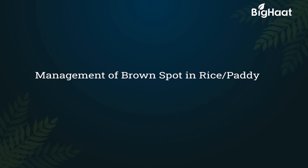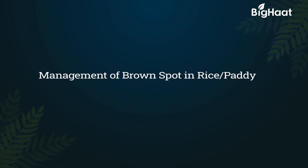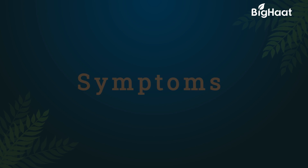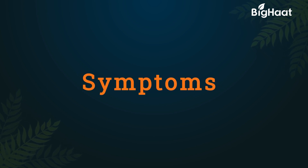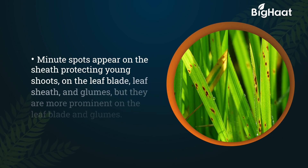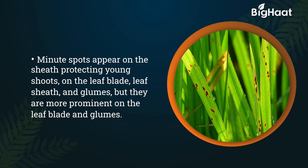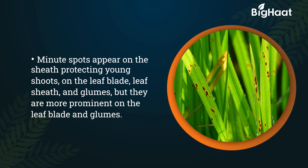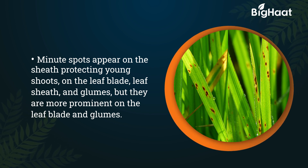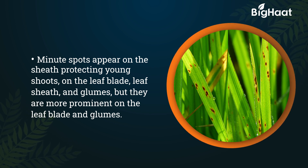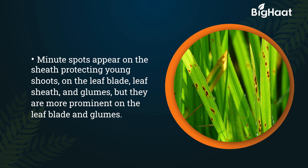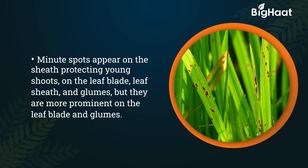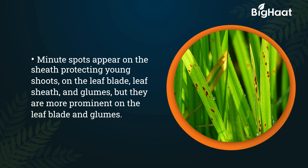Management of brown spot in rice or paddy. Minute spots appear on the sheath protecting young shoots, on the leaf blade, leaf sheath, and glumes. They are more prominent on the leaf blade and glumes.